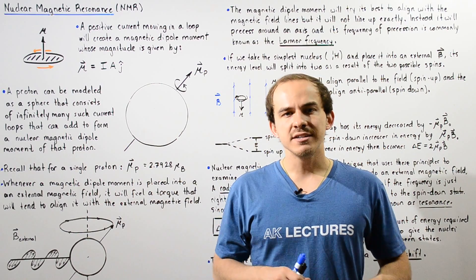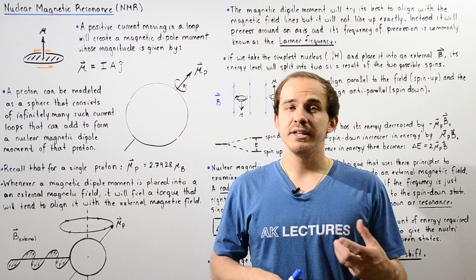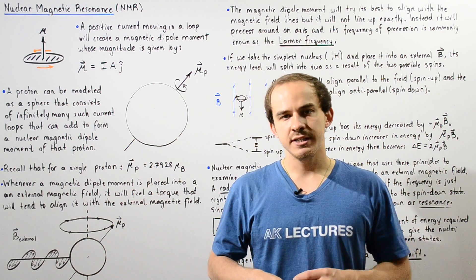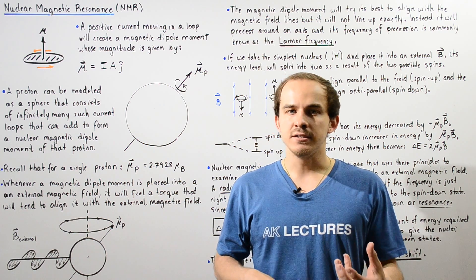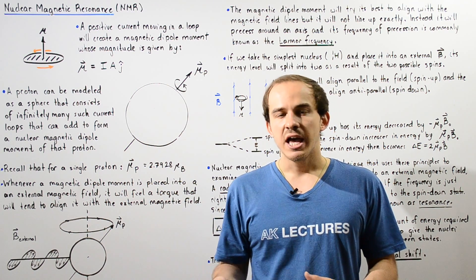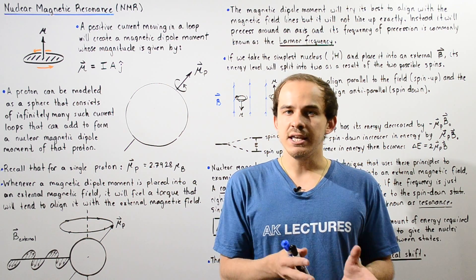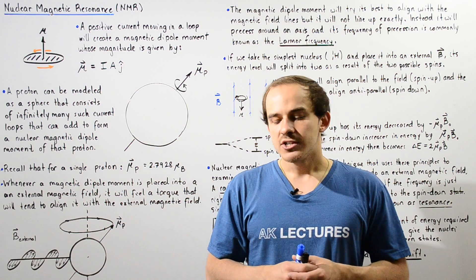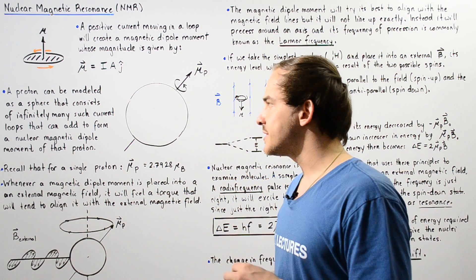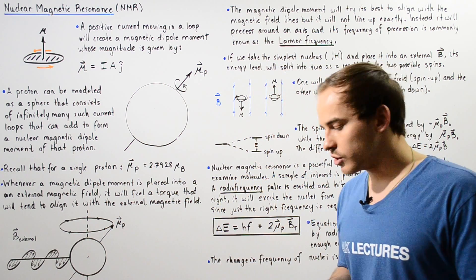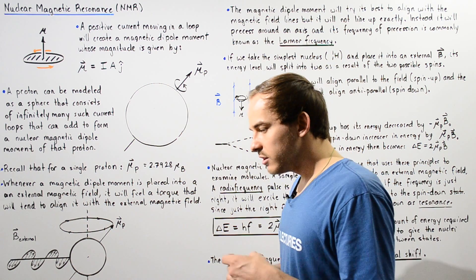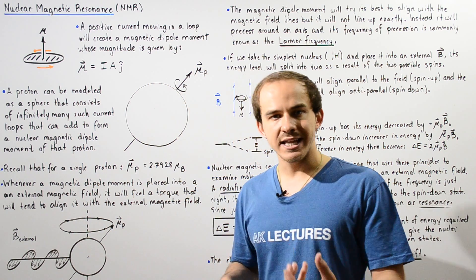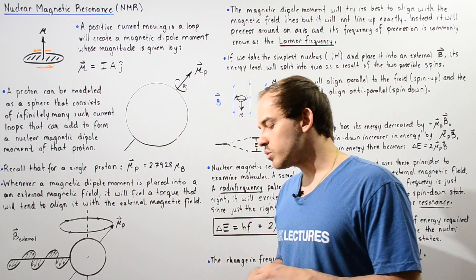Nuclear magnetic resonance, or simply NMR, is a very important and useful technique that is used in fields like chemistry and medicine. This technique comes from nuclear physics. Before we discuss what this technique is and how it actually works, let's recall some basic information about magnetic dipole moments and protons.